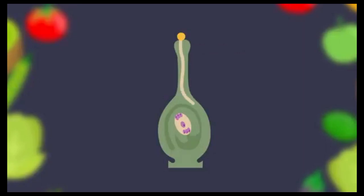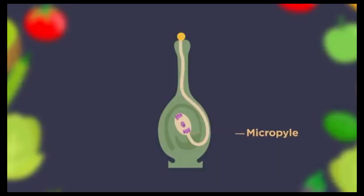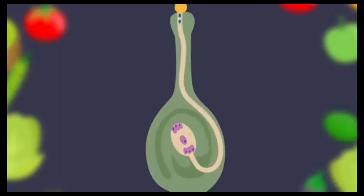The pollen tube enters the ovary through an opening called the micropyle. The male sex cells travel from the pollen grain, down the pollen tube, to the female ovule.